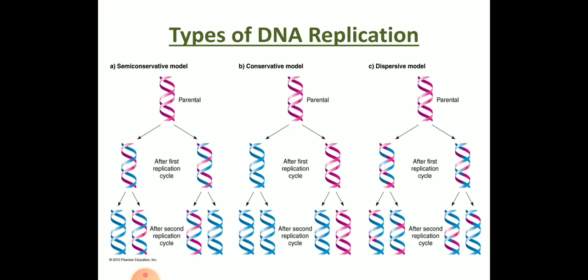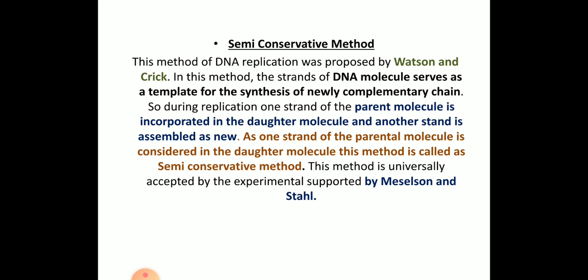There are three types of DNA replication: the semi-conservative method, conservative method, and dispersive method. In the semi-conservative method, the parental DNA strands separate, newly synthesized strands attach, and those DNA molecules serve as templates with complementary daughter strands attached. Because one strand of the parental molecule is conserved in the daughter molecule, this method is called semi-conservative. It was proved by the experiment of Meselson and Stahl.